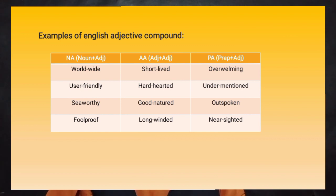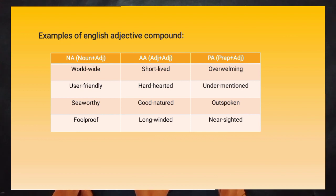And long-winded. The third pattern is preposition followed by an adjective. The examples are: overwhelming, under-mentioned, outspoken, and near-sighted.